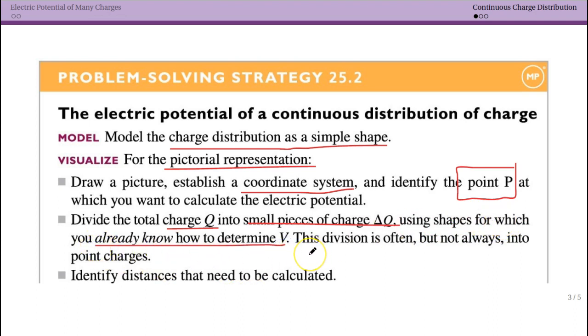The statement is always use the shape for which you already know how to determine V. So when you first do this, it's going to be point charges because you know how to determine the electric potential from a point charge. But then eventually you'll know what it is for a ring and you can build a disk out of a ring, and so on. So if you're given a problem where you're actually looking at the electric potential for multiple wires, you don't have to derive everything from scratch unless you're told to. You can build from what you already know.